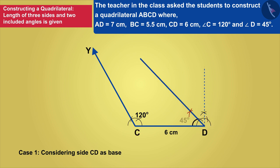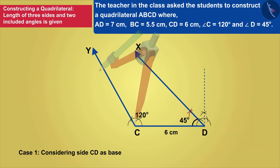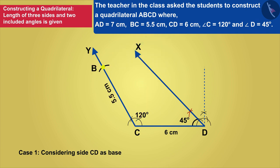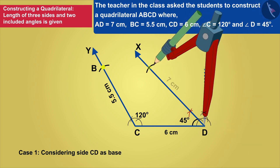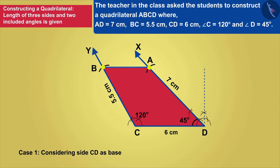Draw an arc by taking C as center and radius 5.5 cm that will intersect at point B. Similarly, by also marking point A, we can construct quadrilateral ABCD.